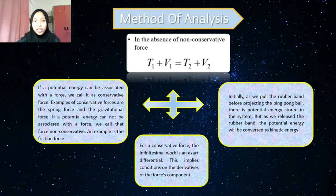Next equation is T1 plus V1 equal to T2 plus V2. If a potential energy can be associated with a force, we call it as conservative force. As we pull the rubber band before projecting the ping pong ball, there is potential energy stored in the system. But as we release the rubber band, the potential energy will be converted to kinetic energy.